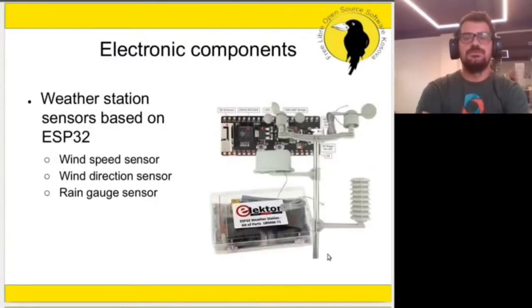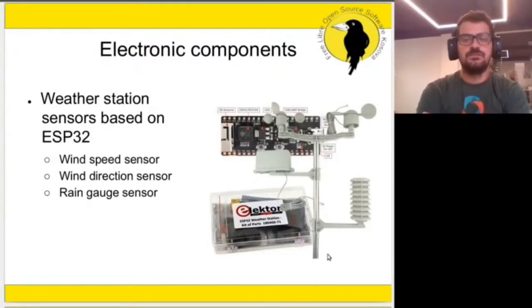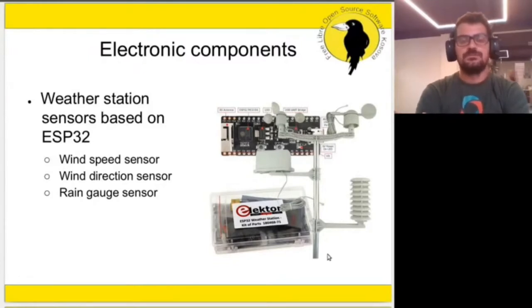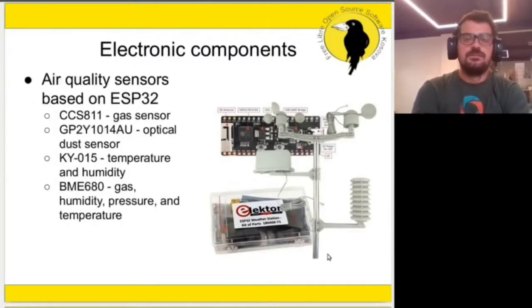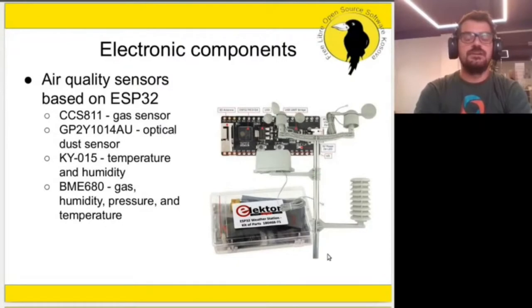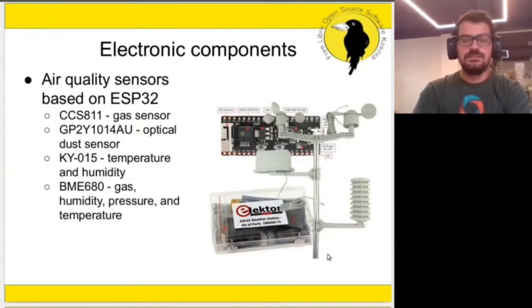Let's go deeper into the components we are using. The weather station as well as the air quality station is based on an ESP32 microcontroller. For the weather station we are using wind speed sensors, wind direction sensors, and a rain gauge sensor. We are also using different sensors for air quality such as gas sensors, optical dust sensors, temperature and humidity, pressure, and other sensors.